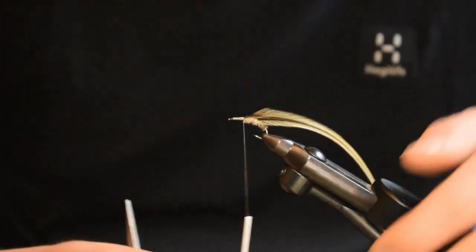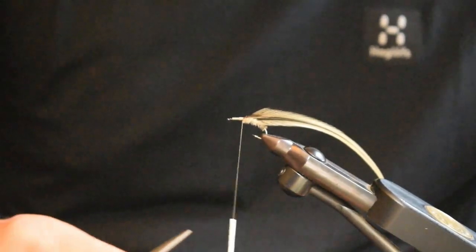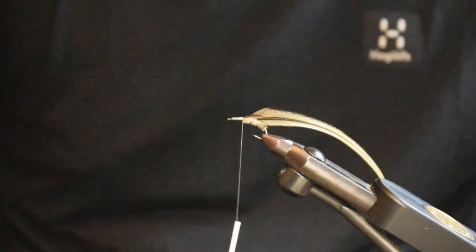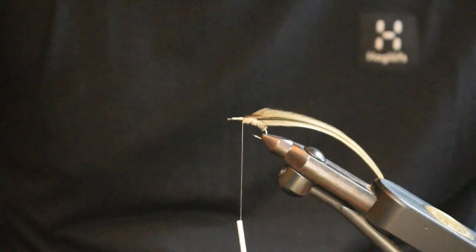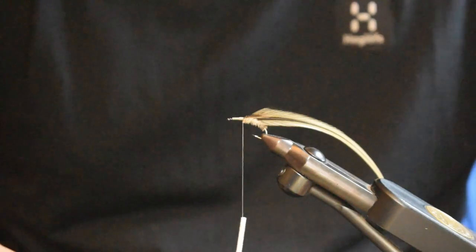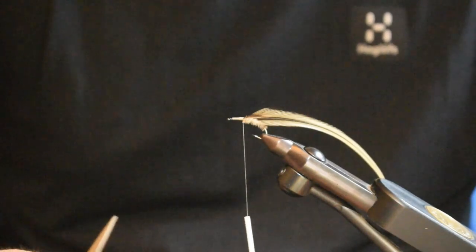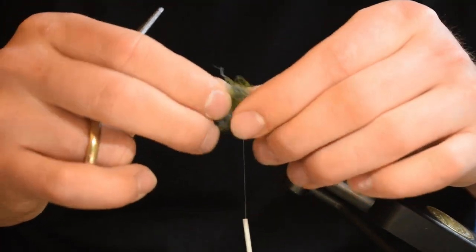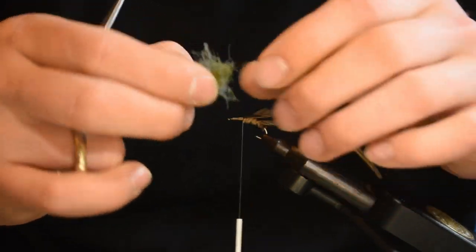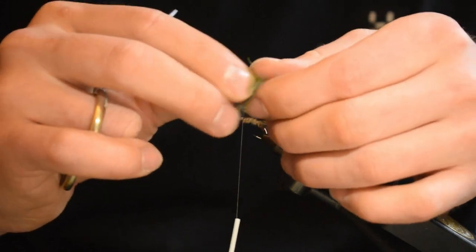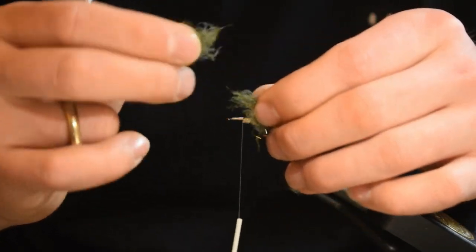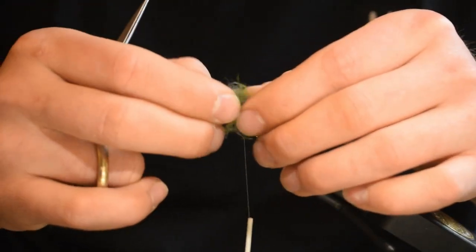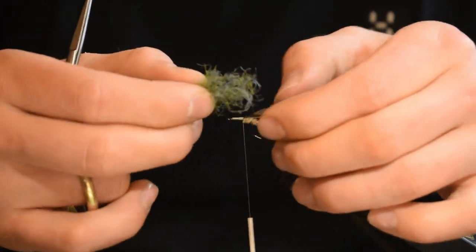I'm going to take some CDC dubbing in dark grey and olive, and I'm going to mix that together. It's going to be like 40% olive and 60% of the dark grey. Mix that together, just turn it around in your fingertips. There we go.